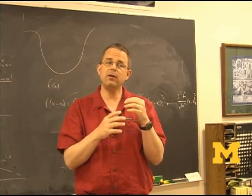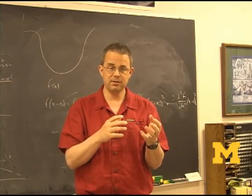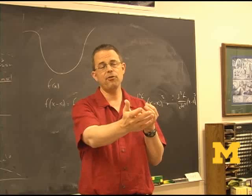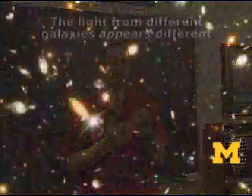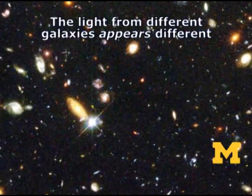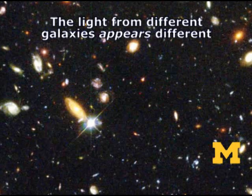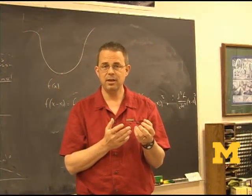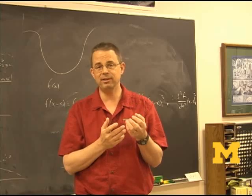It turns out that when we observe the light from galaxies, when we see it after it has been traveling through the universe for a long time, it doesn't look the same when it comes from every galaxy. And the way that it differs depends on how far away the galaxy is and how long the light has been traveling from the galaxy.